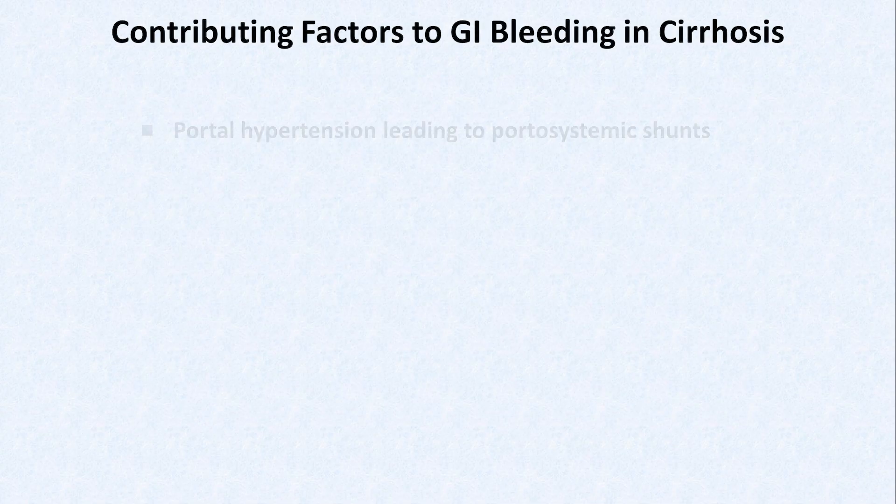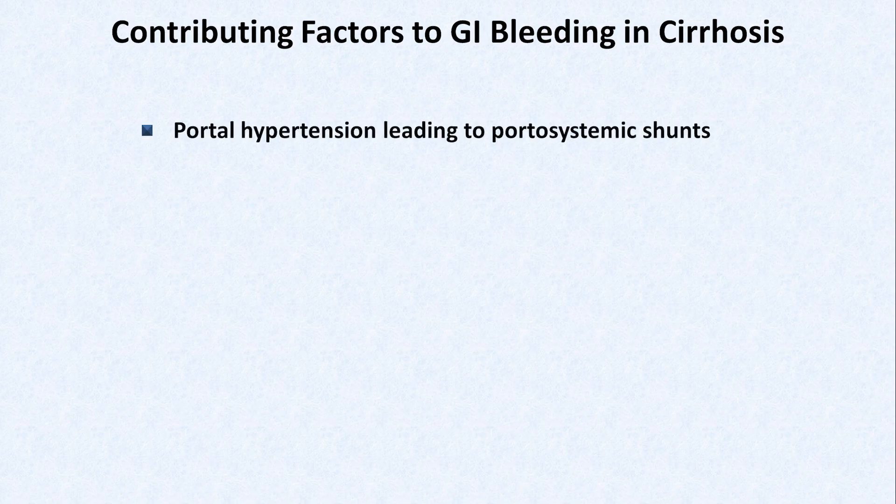The most significant factor in cirrhosis that increases a patient's predilection for GI bleeding is portal hypertension, leading to portosystemic shunts, which are either abnormal or exaggerated means of collateral blood flow between the portal venous system and the systemic veins.